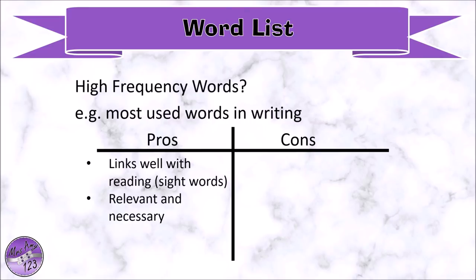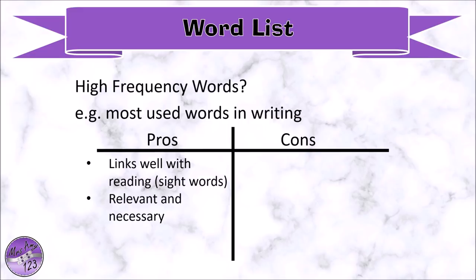The word list I choose to use is a high frequency word list — things like Fry, Dolch, Oxford — the most used words in the English language. The particular list I use, which I was given a long time ago, contains 1,200 words that make up 89% of all written language. Studies were done to pull out words appearing most frequently across different texts. The pros are that these align well with reading and sight words — kids spelling words they can already read — and it's very relevant and necessary. If you can ace all those words before leaving primary school, you're on a really good footing.